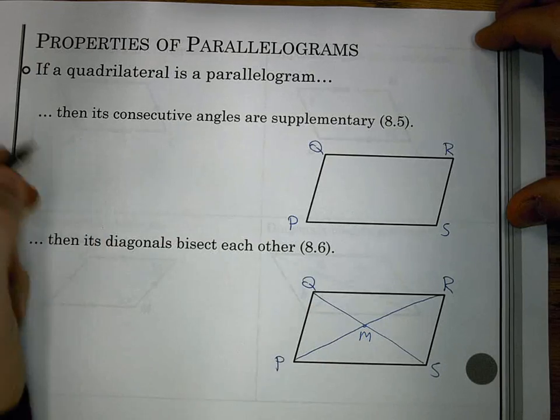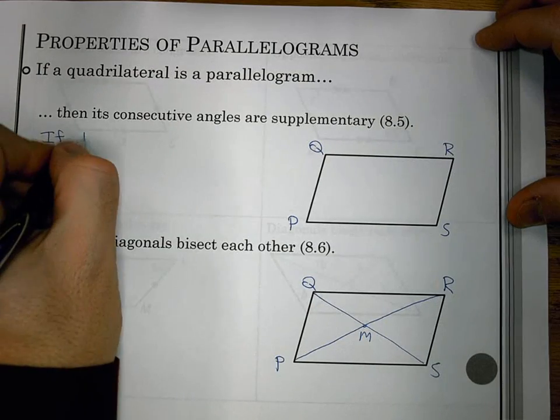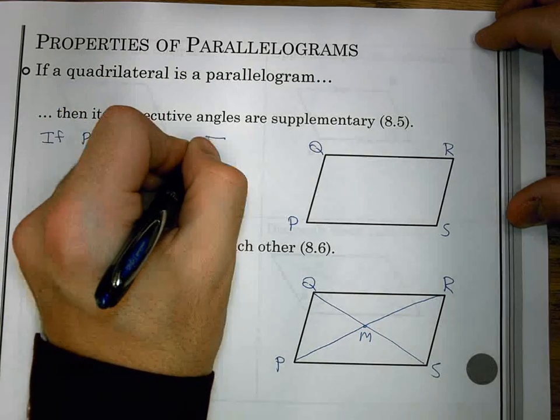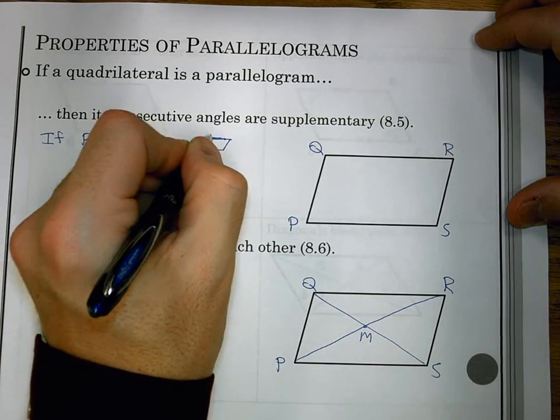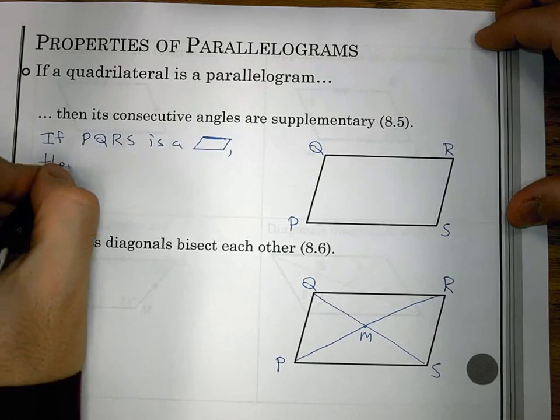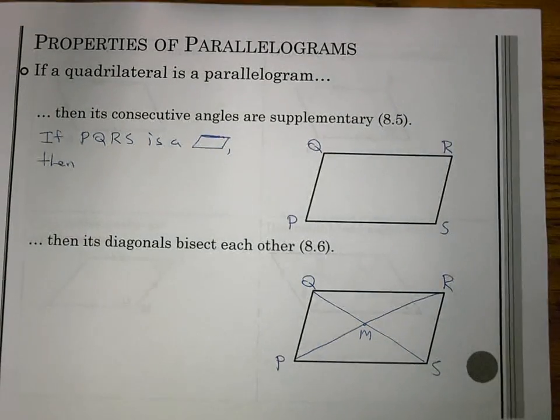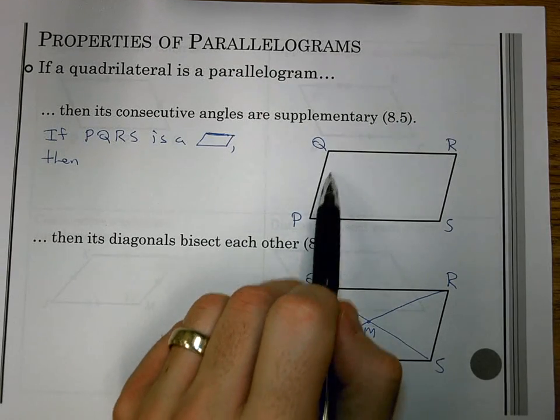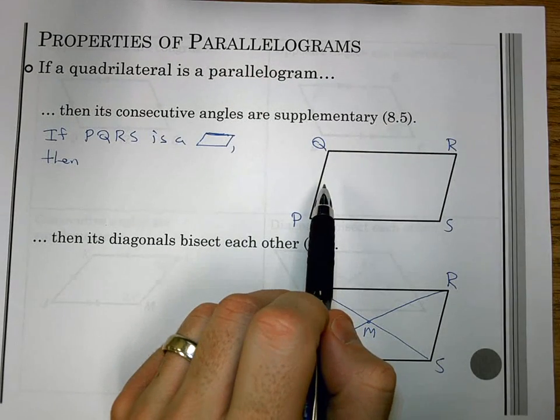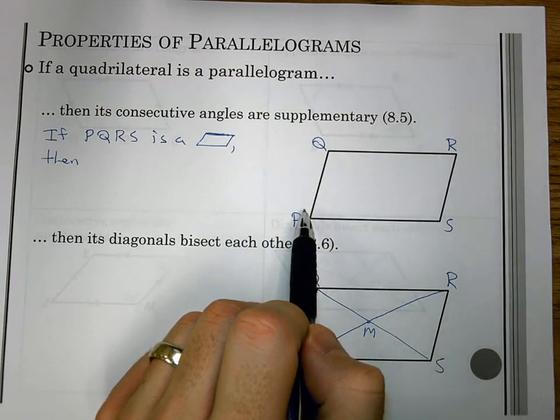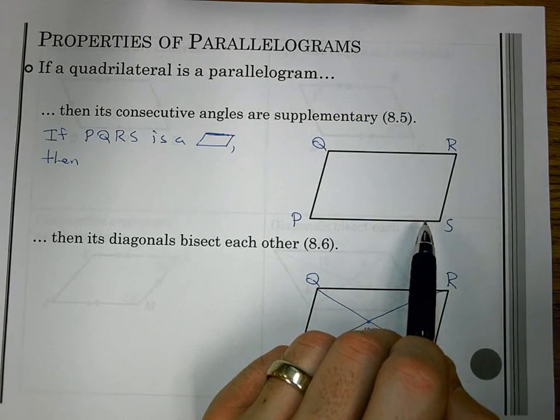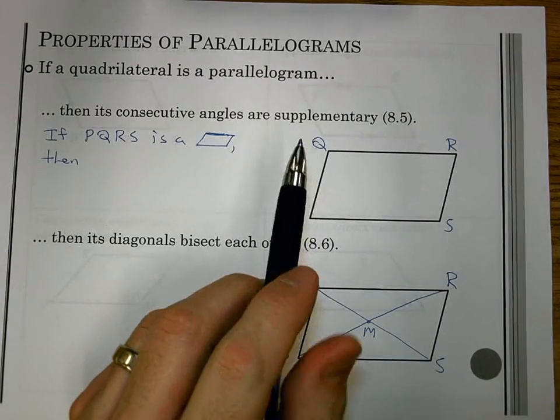So, if we have PQRS is a parallelogram, then consecutive angles are supplementary. Well, how are we going to write that? First of all, we're saying that the angles next to each other would be supplementary. So I can list: PQ would be supplementary, QR supplementary, RS supplementary, SP are supplementary. That's a lot, though.